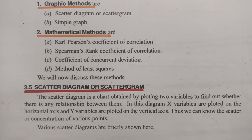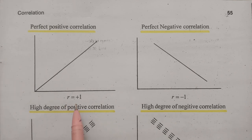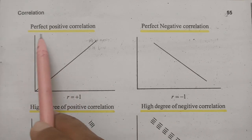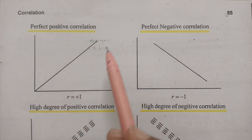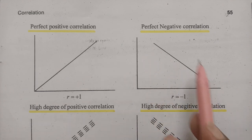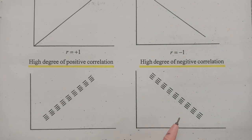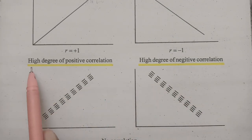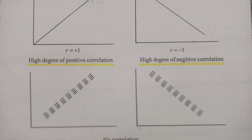Various scatter diagrams are briefly shown here. If the coefficient of correlation is positive +1, this is a perfect positive correlation. If the coefficient of correlation is minus 1, this is a perfect negative correlation. This scatter diagram shows a high degree positive correlation and this one is a high degree negative correlation.